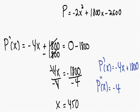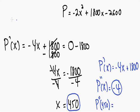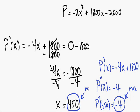Our second derivative is negative 4. Now we need to verify if the critical value of 450 is a max or a min by plugging it into the second derivative. Notice the second derivative is a constant — negative 4 — so no matter what value of x you plug in, it's always negative 4. If the second derivative is negative, the critical value is a maximum. This verifies that x equals 450 is indeed a maximum, which is good because the question asks us to find the maximum profit.